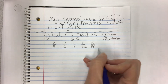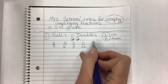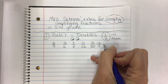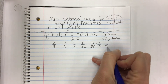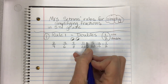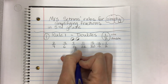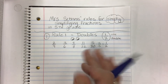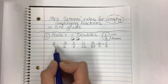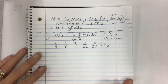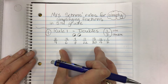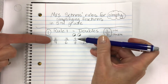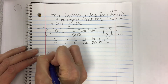If whatever number is on top is times two on the bottom, that's a double and it simplifies to one half in one step. You divide both numbers by the top number: fifteen thirtieths divided by fifteen gives one half; eleven twenty-seconds divided by eleven gives one half; four eighths divided by four gives one half. So look for these doubles — they come up absolutely the most often. Rule two: